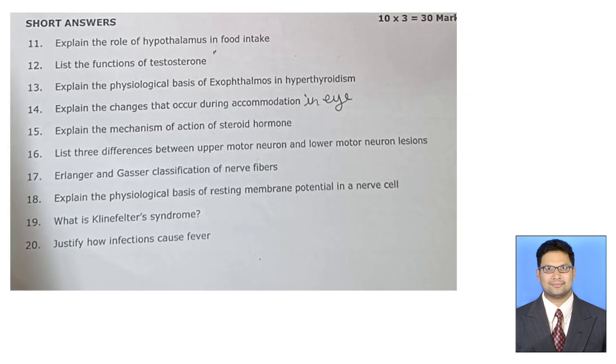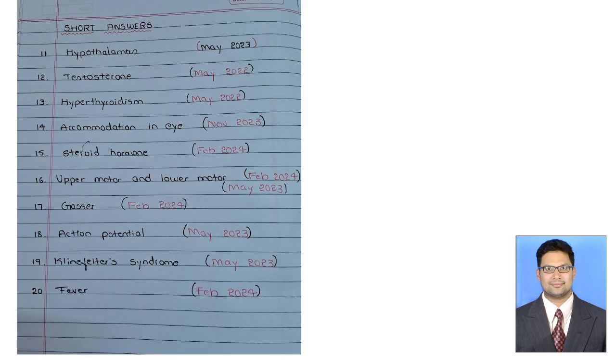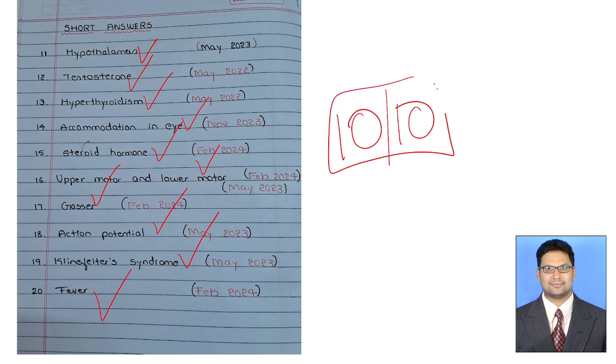Now the short answer. Most of the short answers, they are usually asked concepts. What we can see here: Hypothalamus, testosterone, hyperthyroidism, accommodation in eye, steroid hormone, upper lower motor neuron palsy, Gasser classification, action potential, Klinefelter syndrome, fever. All 10 were repeats from most expected questions. Let me discuss briefly about the answer.